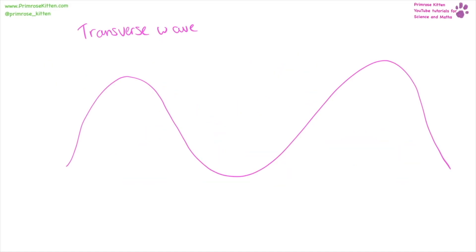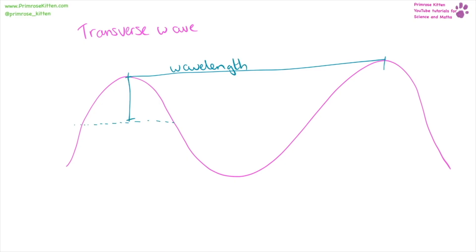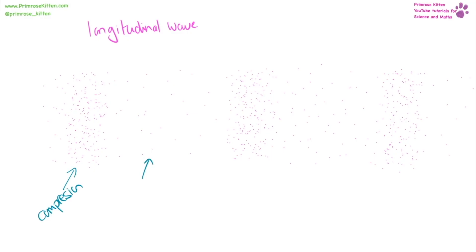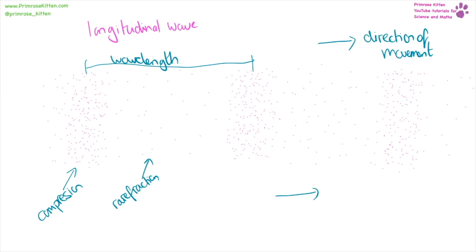A transverse wave goes up and down from one point to another point. The wavelength is measured from any equivalent point to the next — top to top, or middle to middle. The amplitude is measured from the middle to the top or middle to the bottom. The direction of oscillation is up and down, and the direction of energy transfer is sideways. In a longitudinal wave we have areas of compression and rarefaction, and we can measure the wavelength from one equivalent point to the next. The direction of movement and energy transfer is side to side.